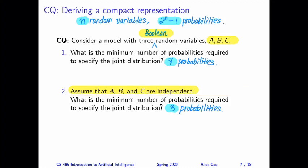After watching this video, you should be able to explain how knowing the independence relationships between some random variables can allow us to derive a compact representation of a joint probability distribution. Thank you for watching. I will see you in the next video.